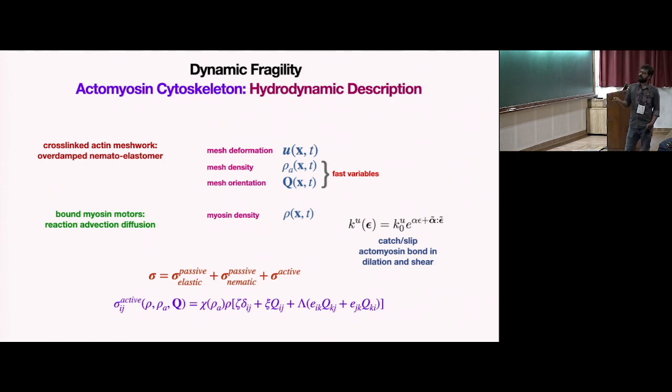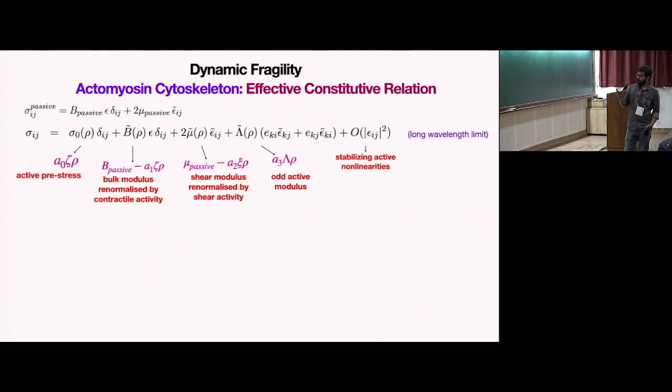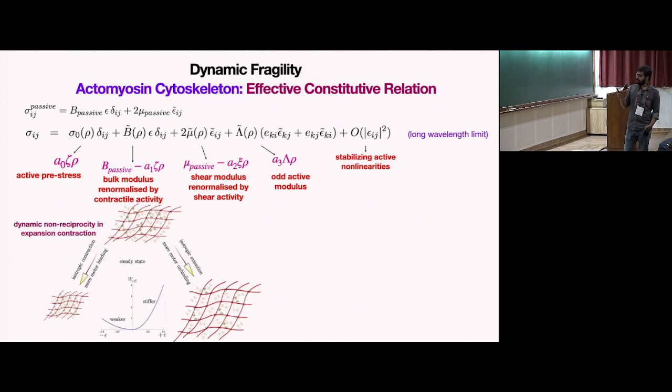The main part of this talk is the form of the stress tensor of this material. The stress tensor has three parts: one passive elastic part from the elastomer, passive viscoelastic part, and one active part. We are assuming this particular form of active stress here - isotropic activity, anisotropic or shear activity, and so-called odd activity. As a result of this active activity, the passive elastic constitutive law becomes this dynamic elastic constitutive law, where you have renormalization of various moduli by activity. Additionally, you have an active back pressure and stabilizing active nonlinearities.